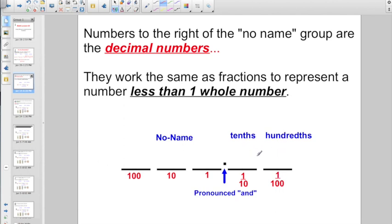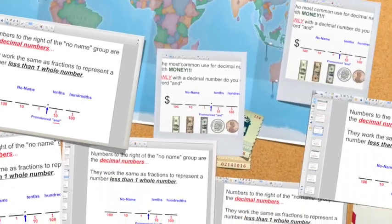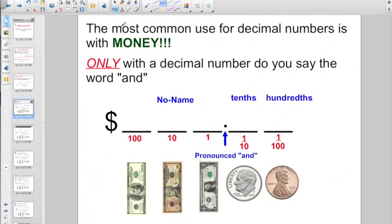Those are the only two we're going to talk about today. And now we can finally go ahead and use the word 'and' because the decimal point is when we use the word 'and.' So, the most common use for decimal numbers is with money. And only with the decimal number do you say the word 'and.'